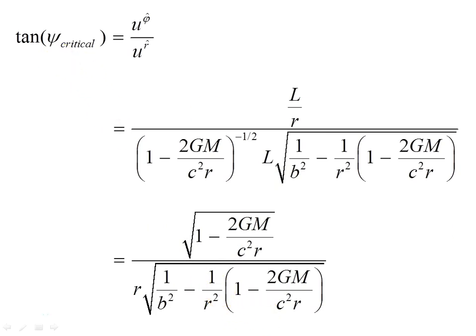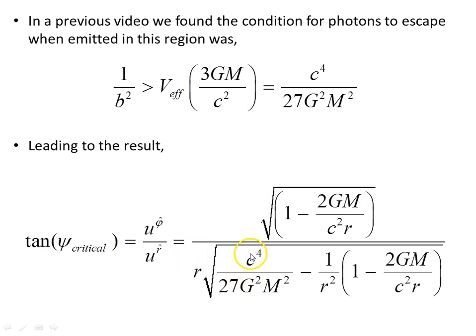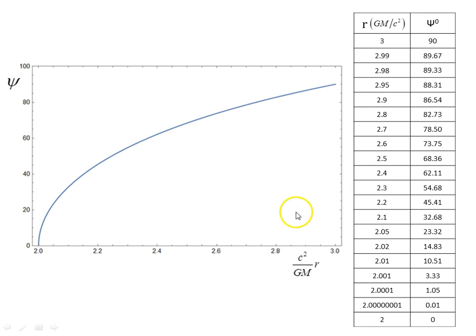The next step is finding tan(ψ) for the critical angle, which is û_φ on û_r. The L's cancel out and we're left with that expression for tan(ψ). From previous videos we found the condition for photons to escape when emitted in the region from 2GM/c² to 3GM/c²: 1/b² must be greater than the value of the effective potential at that point. So where we had 1/b², we substitute that object in, giving tan(ψ_critical) = û_φ / û_r.